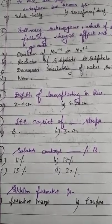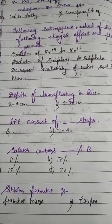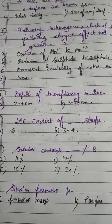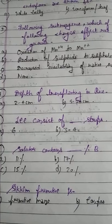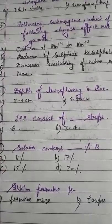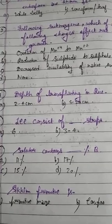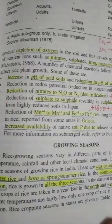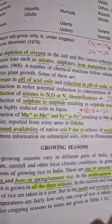Option A says oxidation of Mn4+ to Mn2+. Does oxidation happen in submergence? No — reduction happens, so option A is wrong. Option B: reduction of sulfide to sulfate. Does this happen? No — reduction of sulfate to sulfide is what happens, so option B is incorrect. Option C: decrease in availability of native soil phosphorus. This does not happen because native phosphorus availability increases after submergence. Therefore option C is also incorrect.